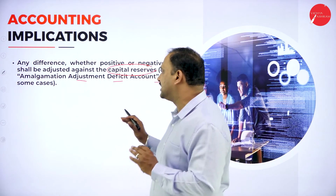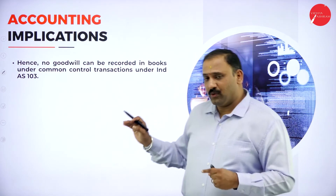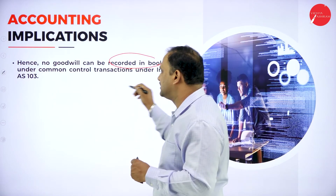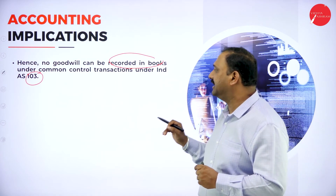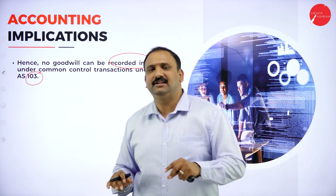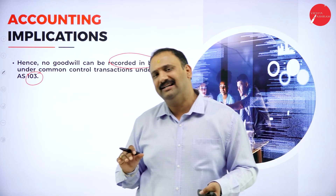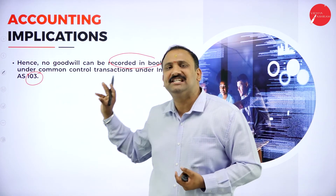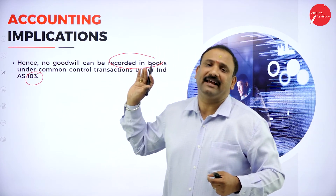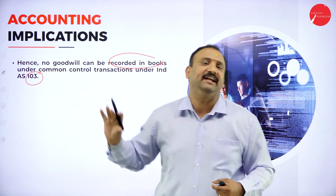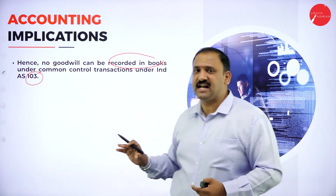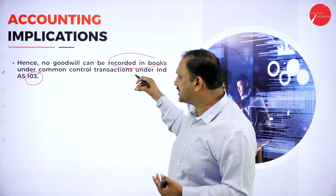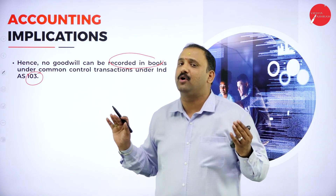No goodwill can be recorded in the books under the common control transaction as per Accounting Standard 103. The amalgamation or combination adjustment of the deficit account must be managed carefully. In this transactionary practice, goodwill cannot be recorded separately — it cannot be taken in as an adjustment. This is not a common standard at all.